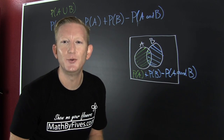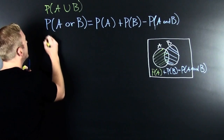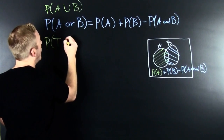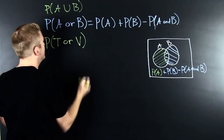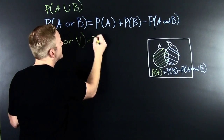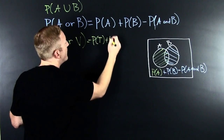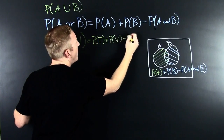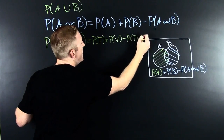Let's get back to our example. We're looking for the probability that she will get ticketed or that she will be vandalized. This is going to be the probability of a ticket plus the probability of vandalism minus the probability of ticket and vandalism.